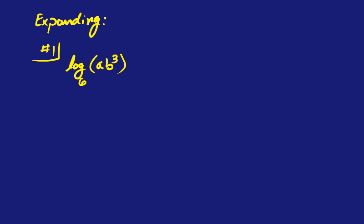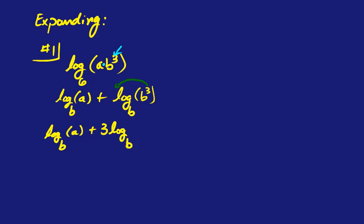So the first thing we're going to do is we're probably going to separate the a and the b to the third, because if you think about it, the a and the b are being multiplied, and this power of 3 right here is not on the a and the b, it's just on the b. So the best idea here is to break it up using the product property, so the log base 6 of the first thing being multiplied, so a, plus, because it's multiplication, log base 6 of b to the third.